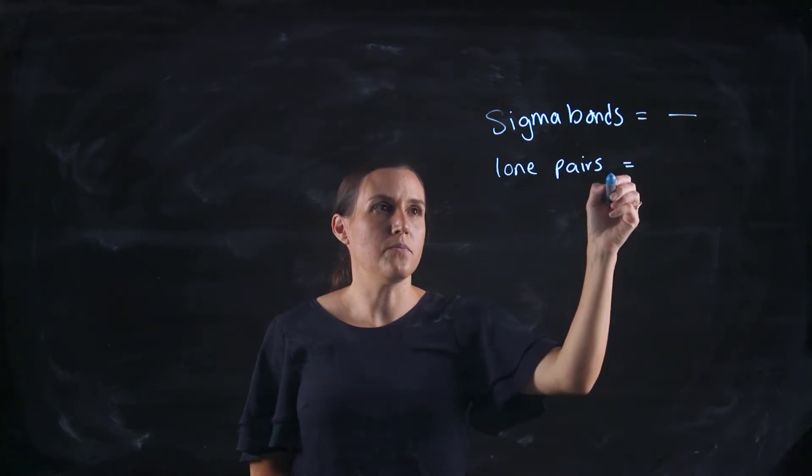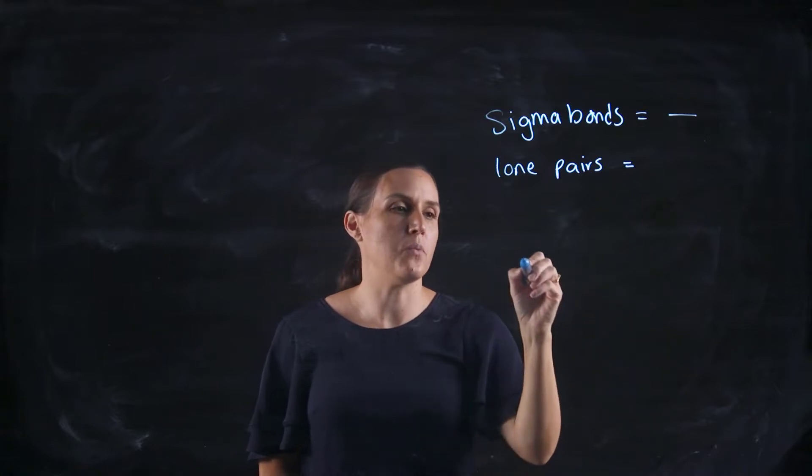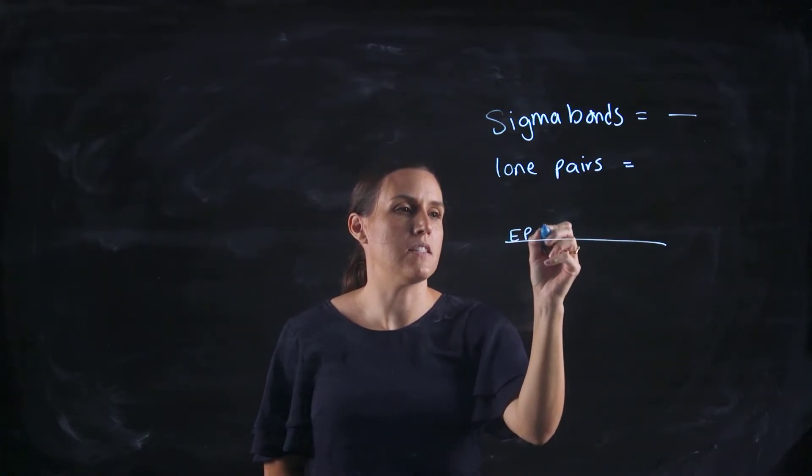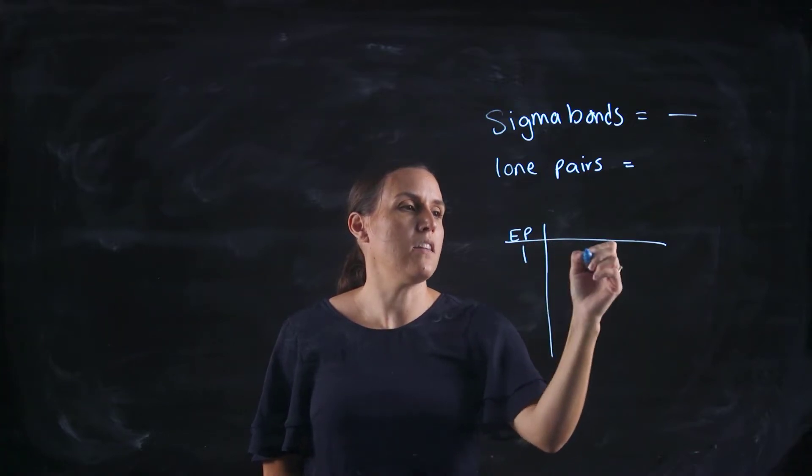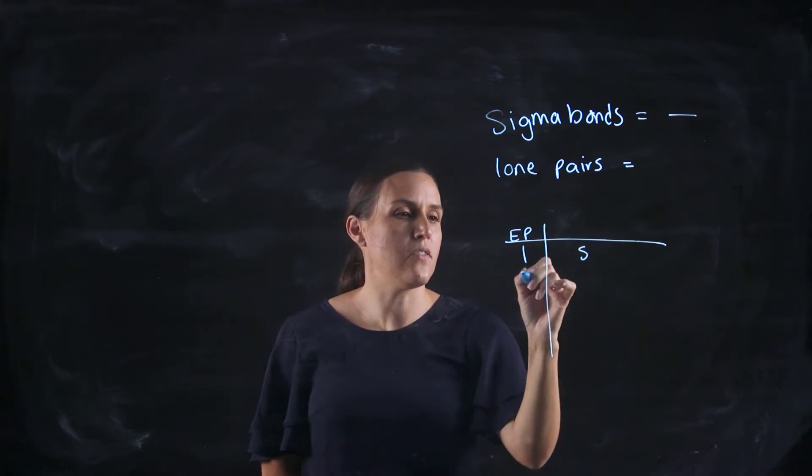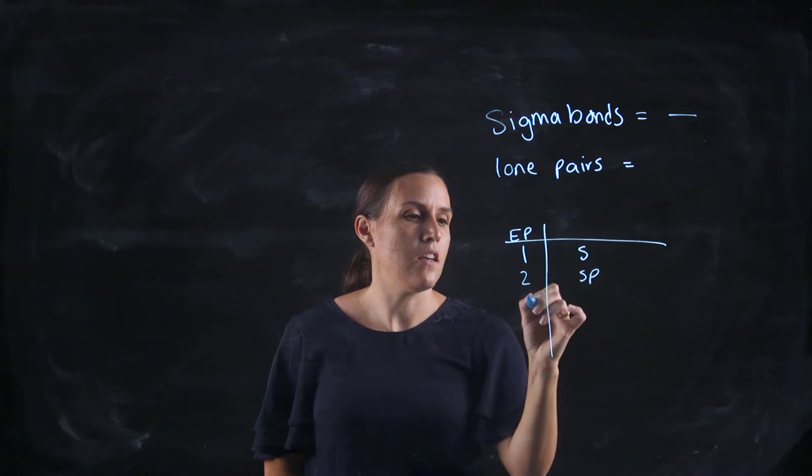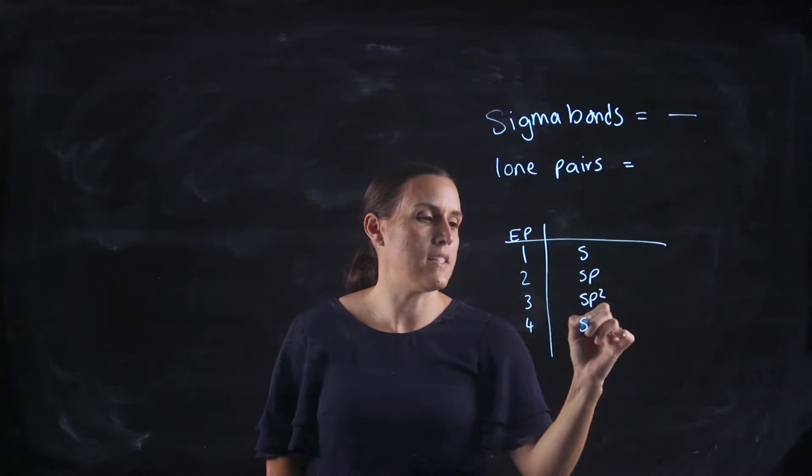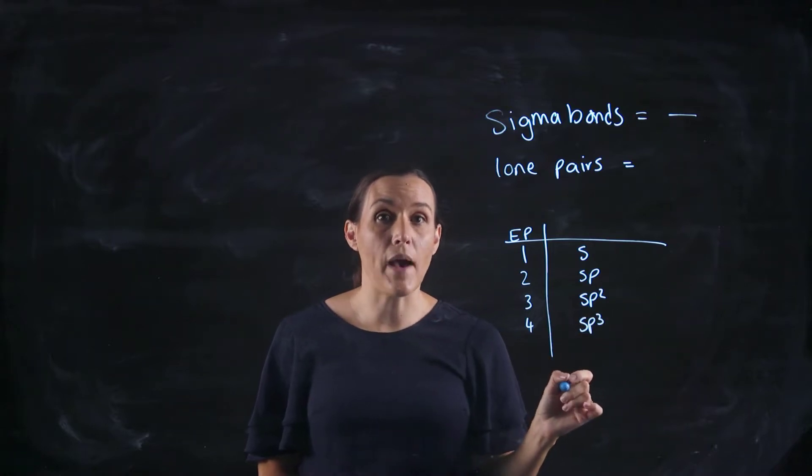So counting those up and seeing what number you end up with, you can call them effective pairs or EPs. If you have 1, the hybridization would be s. If you have 2, it would be sp. 3 would be sp2, 4 would be sp3. Can you see the pattern?